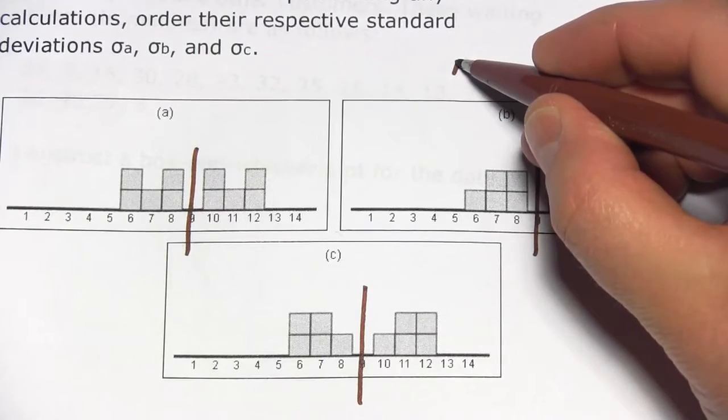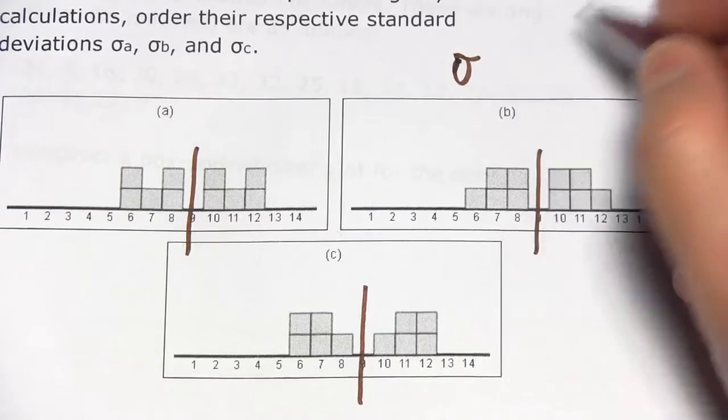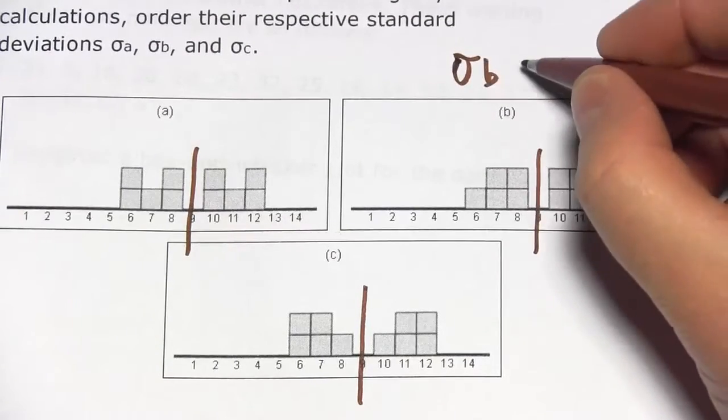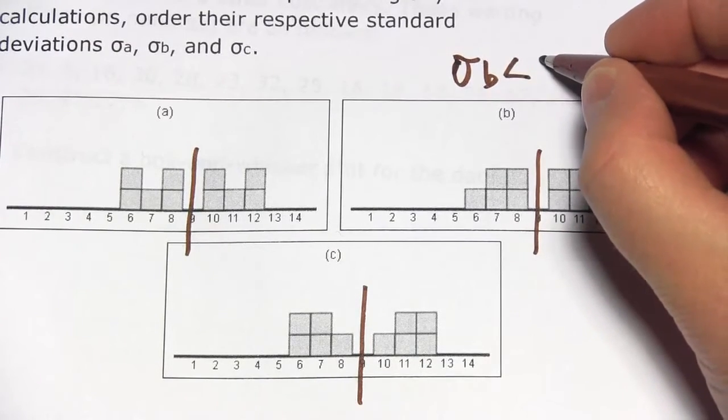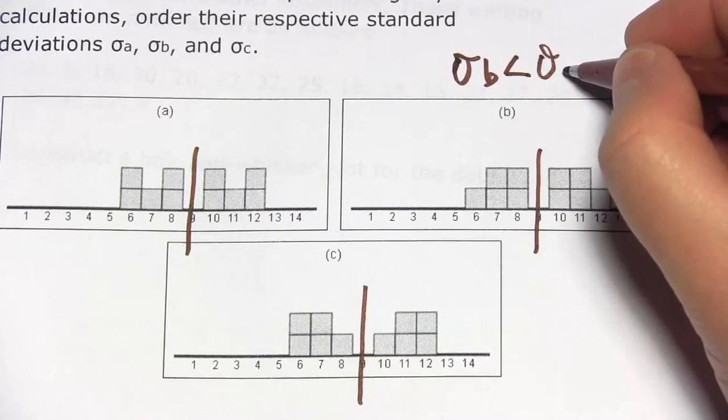So the standard deviation, and let's see we use σ of B, is less than the standard deviation of A.